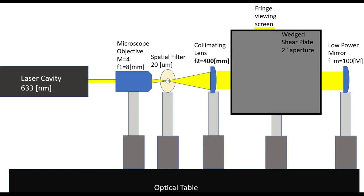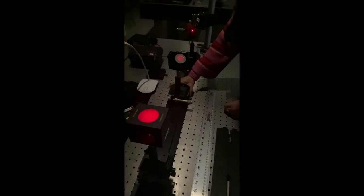Now that we had everything set up, we began the first experiment, which was to place the low power mirror with 100m focal length after the shear plate and rotate the plate such that the reflected light from the beam was incident on the surface.